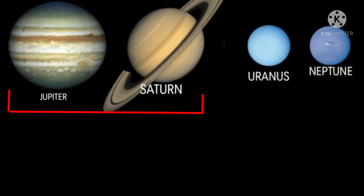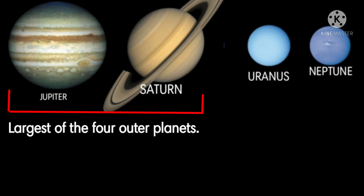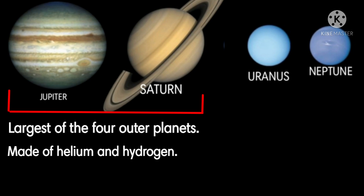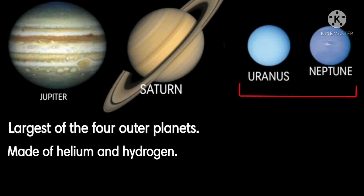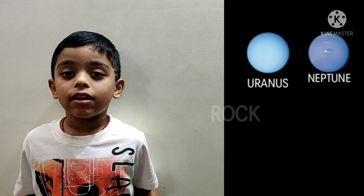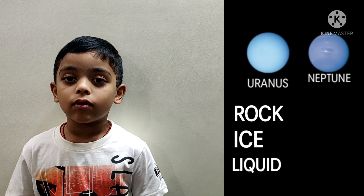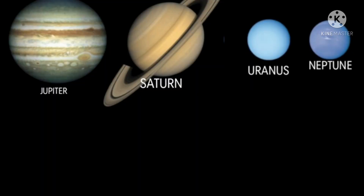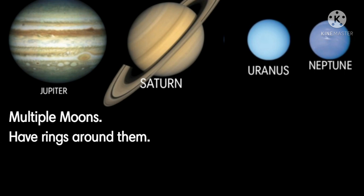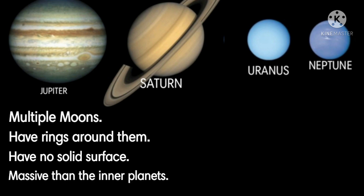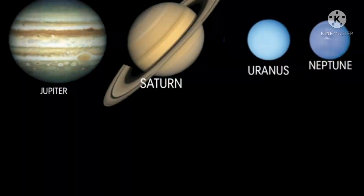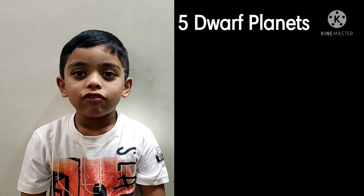Gas giants are the largest of the four outer planets and are made of helium and hydrogen. Ice giants contain rock, ice, and liquid. All four outer planets have multiple moons, they all have rings around them, they have no solid surfaces, and are more massive than the inner planets.